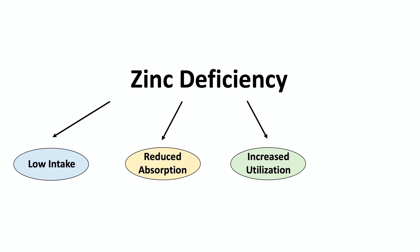Zinc deficiency can also occur from increased utilization — you might be getting enough in your diet and absorbing enough, but using so much that it causes a deficiency, as seen in cases of pregnancy. There can also be increased losses from excessive diarrhea or excessive urine losses. That leads us into the signs and symptoms of zinc deficiency, broken down by the body systems affected.